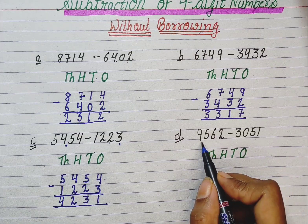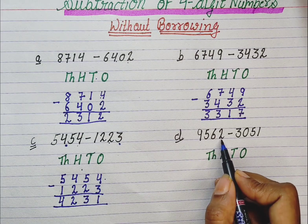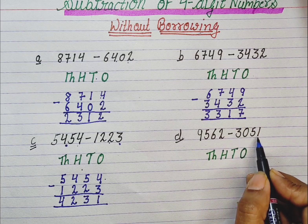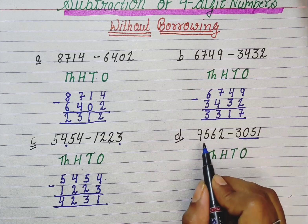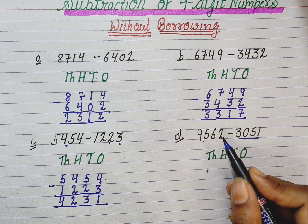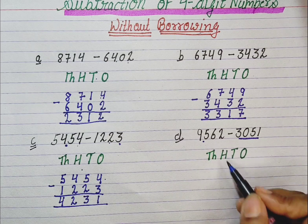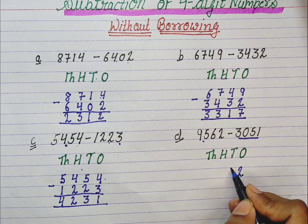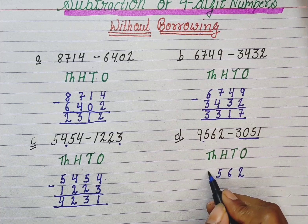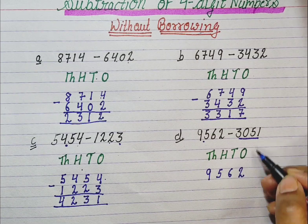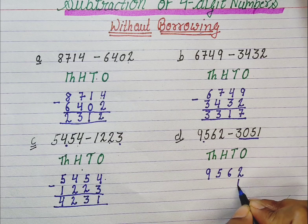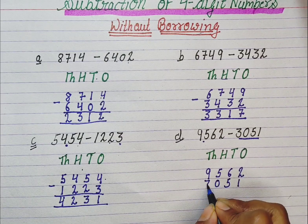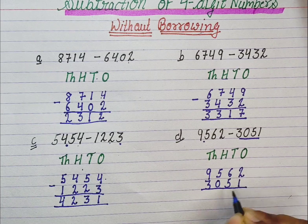Next question: 9562 minus 3051. We subtract these numbers from these. So we write the top number: 2, 6, 5, 9. Now we write the bottom number below it: 1, 5, 0, 3. Now we subtract them.